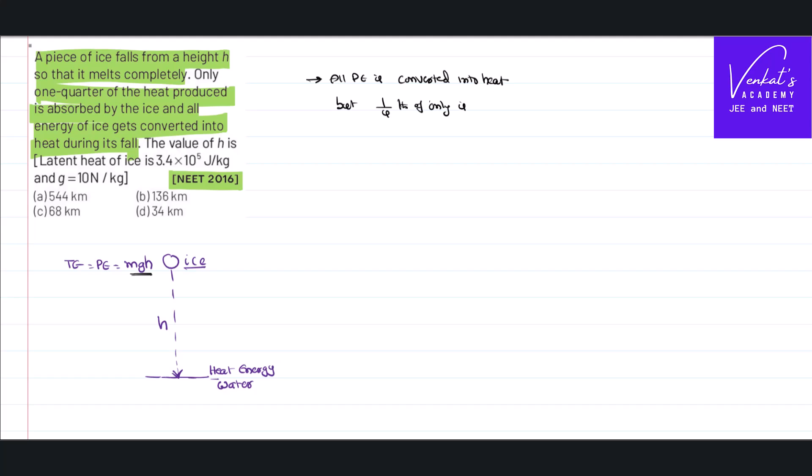Is absorbed by ice, and that is only useful to convert ice into water. So one by fourth of potential energy mgh is used to convert ice into water. How can I write it based on the definition of latent heat?